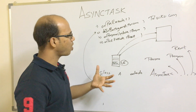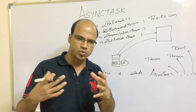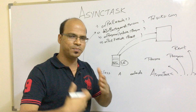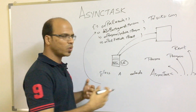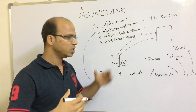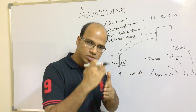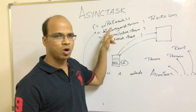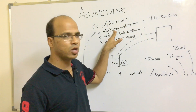So when you want to achieve async task: before sending the request, you need to do some prerequisites — that's your onPreExecute, and this method is handled by your UI thread itself. After that, once you send the request, what should happen in the background is what you mention in doInBackground. So if you want to send a request or do anything in the background, those tasks are done inside doInBackground.